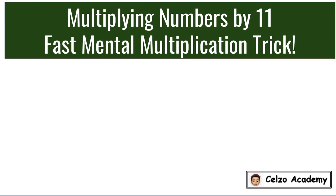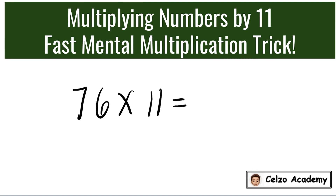Will that work when we multiply 76 by 11? Yes, it will work, but we need to do one extra thing. Same as the previous examples, we write the numbers 7 and 6 and leave a space between them.